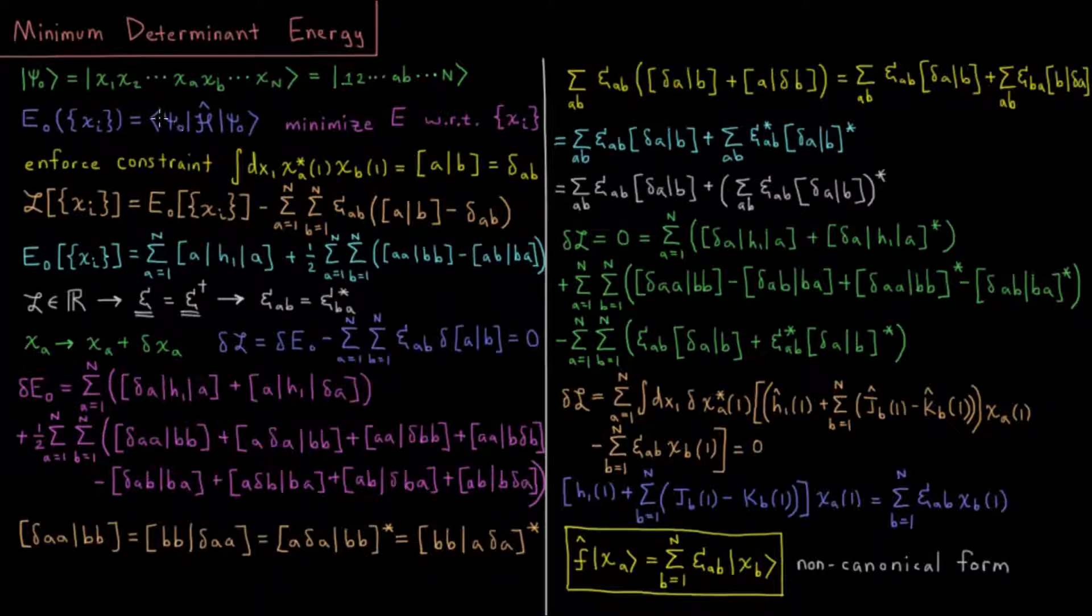That energy equals the expectation value integral of the complex conjugate of that determinant times the Hamiltonian total energy operator acting on that wave function determinant, integrated with respect to all variables of the system. If there are n electrons, there would be 4n total variables: 3n spatial coordinates x, y, and z for each electron, and a spin coordinate for each electron as well.